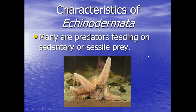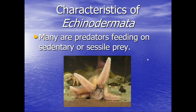Many echinoderms are predators and feed on sedentary or sessile prey. In this image, a sea star is wrapping itself around a clam — that clam has no escape. The sea star is going to open it and devour it inside its shell. We'll talk more about how it does that in a future video lesson.